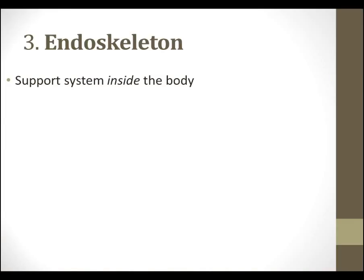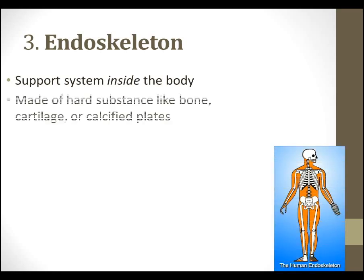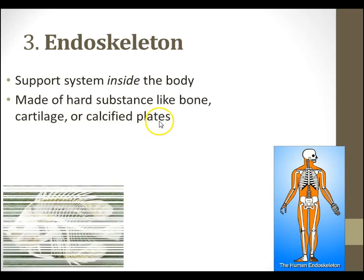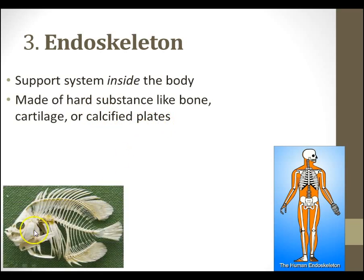Now, the endoskeleton, which is of course what we have. Here you have a support system inside your body — there's our human endoskeleton. Most endoskeletons are made out of a hard substance like bone or cartilage. If we're talking about something like a shark, they don't have bones. Or calcified plates, something like a starfish — they don't have bones in the same way we think, but they do have very tough, calcium-infused plates. Fish, of course, have an endoskeleton.